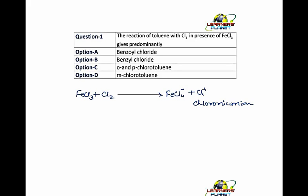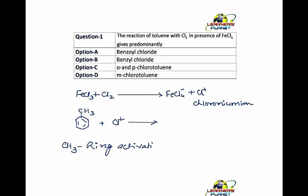Now, this is toluene. Which group is present in toluene? It is CH₃. So CH₃ reacts with the chloronium ion which is formed. And what is CH₃? It is an ortho-para-directing group. That is, CH₃ is a ring-activating group. Ring-activating group means it releases electrons towards the benzene ring.